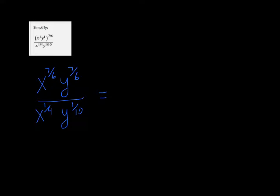And then since we have like bases in the top and bottom, we want to subtract the exponents. The exponents are fractions, so you want to have a good calculator that does fractions for you. So 7/6 minus 1/4 is 11/12.